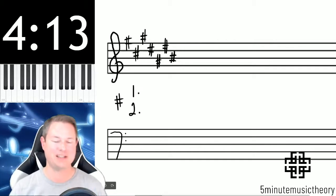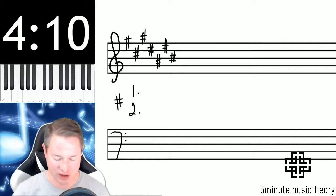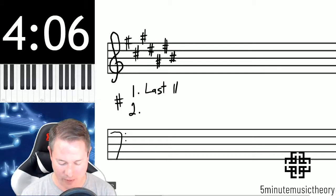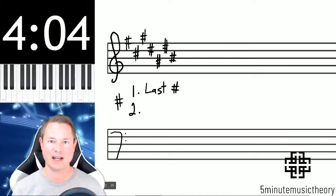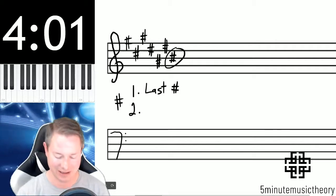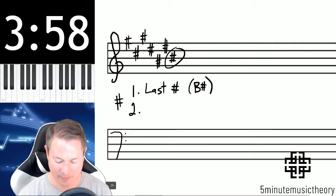So when we have a key signature with sharps, there's two steps to determine that major key. The first step is to find the last sharp, and that's from left to right. So if we go from left to right, the last sharp is B sharp in this instance. So I'm going to put that in parentheses here, B sharp.